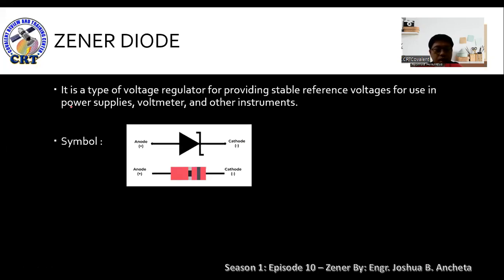Zener Diode is a type of voltage regulator for providing stable reference voltage for use in power supply, voltmeter, and other instruments. The schematic symbol for Zener Diode is this. The difference from a rectifier diode is the symbol on the cathode side. This is the identifier for the Zener Diode.